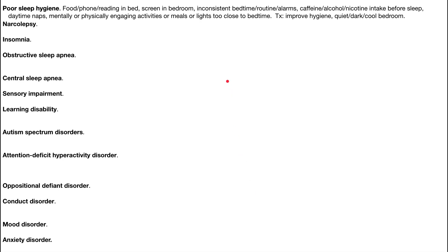First, poor sleep hygiene. There are a couple of signs of poor sleep hygiene. You only want to use your bed for sleeping, so any kid that's eating or playing on a phone or reading in bed might have poor sleep hygiene because they're used to doing other things in bed. You want to associate the bed with just sleep, and that'll help the kid fall asleep more quickly. A screen in the bedroom is generally a bad idea. You want to stop screens maybe an hour or two before going to sleep. An inconsistent schedule is also a problem — you want to make sure that your bedtime, your routine before bedtime, and your alarms in the morning are always at the same time every day, including on weekends.